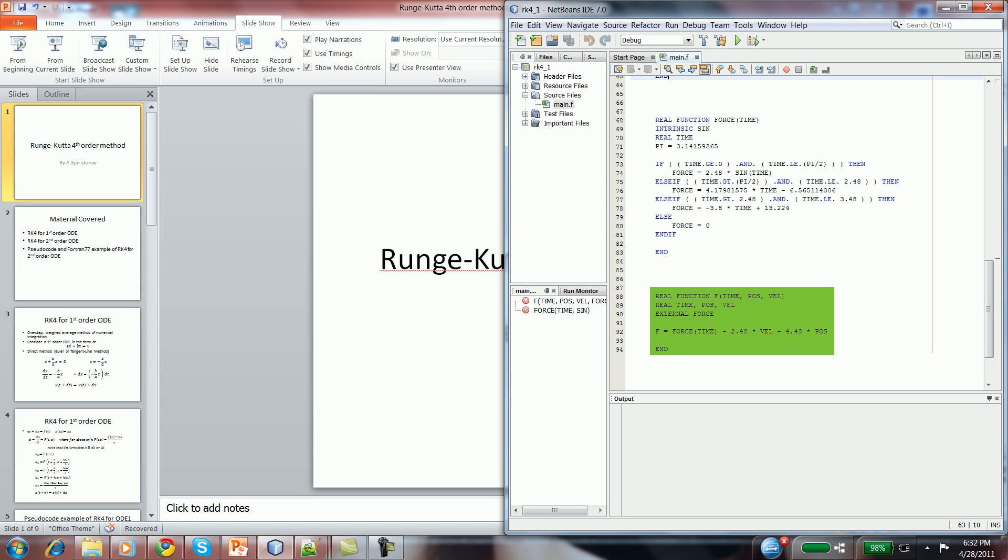Then, I define my slope of v function as a function of time, position, and velocity. And it's force, minus 2.48 velocity, minus 4.48 position.